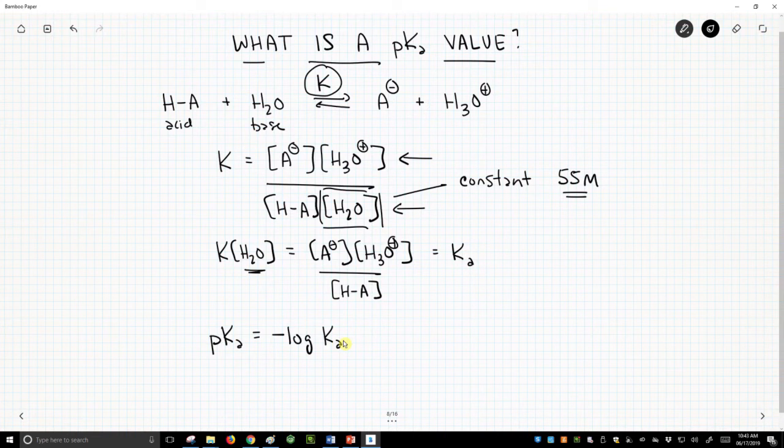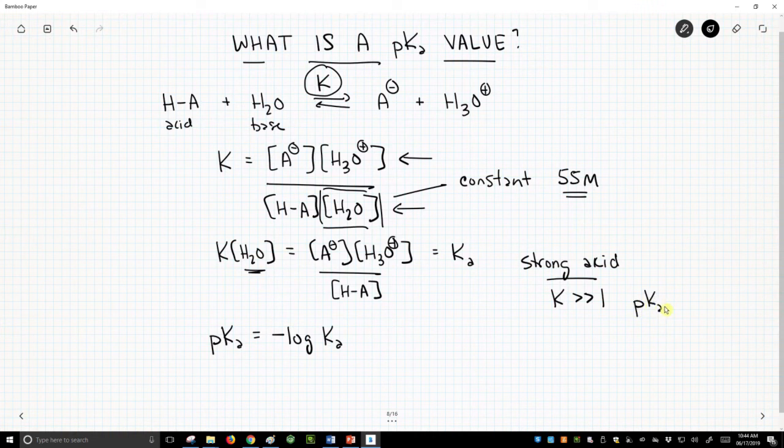Now how does this help us? It turns out people give tables of pKa values for acids, and we can look at the pKa value and quickly determine whether an acid is stronger or weaker than another. So for a strong acid, k tends to be large, much greater than 1, and so pKa, if you go through the negative log of a very large number, the pKa is less than zero. So we tend to get negative numbers for the pKa values of strong acids.